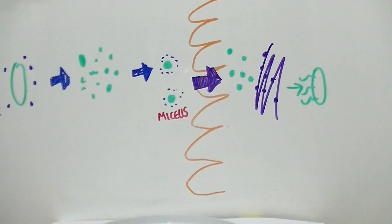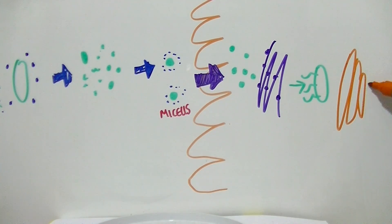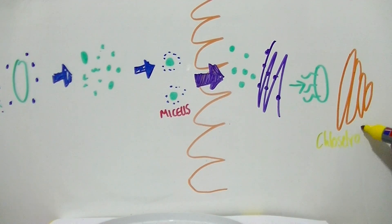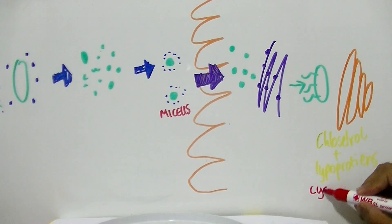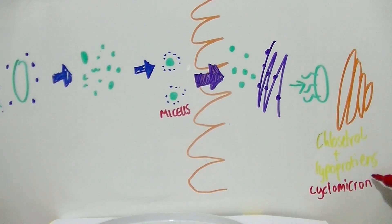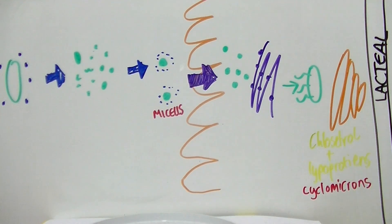Then the triglycerides pass through the Golgi. The Golgi then processes the triglycerides, where they are associated with cholesterol and lipoproteins to make chylomicrons. The chylomicrons are then removed by exocytosis and into the lacteal.